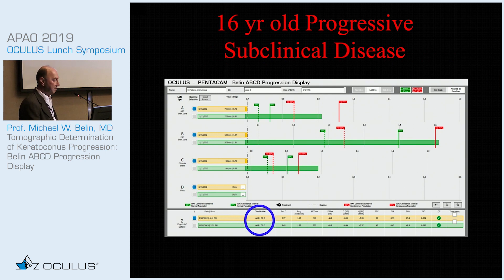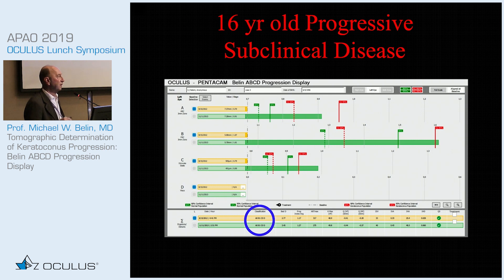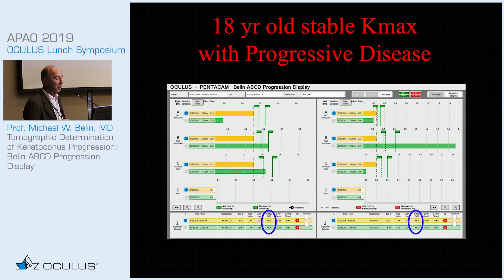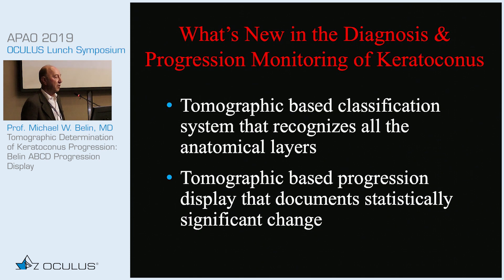Here is a 16-year-old with progressive subclinical disease showing changes on the anterior, posterior, and corneal thickness despite remaining subclinical — the patient is asymptomatic but experiencing progressive ectatic change. Finally, an 18-year-old with progressive disease but absolutely stable Kmax on both eyes. Despite the stable Kmax, there is marked change on the posterior surface and corneal thickness. The goal of this progression display is to allow determination of progression based on a tomographic classification that recognizes all anatomical layers, so we can intervene early enough to preserve vision rather than intervening after vision is already lost.